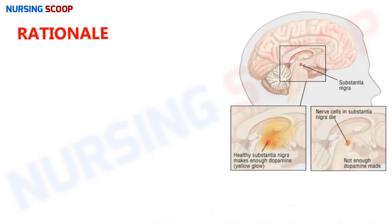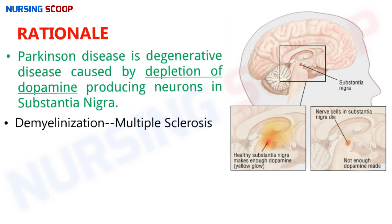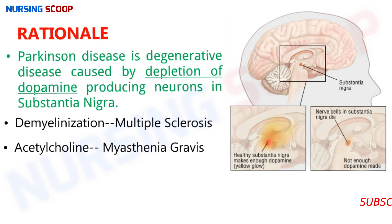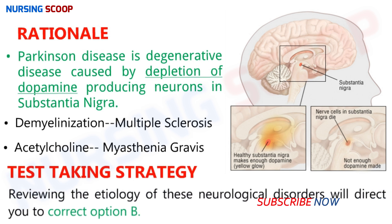Rationale: Parkinson's disease is a degenerative disease caused by depletion of dopamine-producing neurons in the substantia nigra, which is a structure of the basal ganglia. The deficiency of dopamine leads to the development of Parkinson's disease. Demyelination of neurons means destruction of the myelin sheath and is associated with multiple sclerosis. Destruction of acetylcholine receptors is associated with myasthenia gravis. Test-taking strategy: review the etiology of all important neuro disorders.